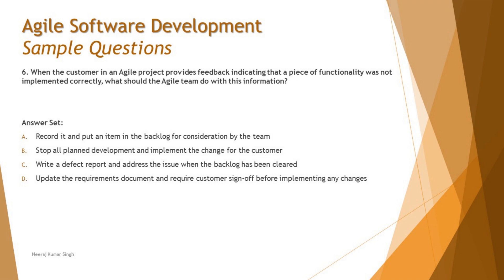Any requests, suggestions, feedbacks, or change requirements go into the backlog, highly prioritized, so Sprint 2 picks them up. Option C says write a defect report and address the issue when the backlog has been cleared. A defect report is for testing, not customer feedback — it's not a defect being identified but rather the customer not being satisfied with what was implemented. In agile, if the customer is not happy, we rework on it.